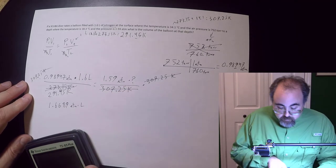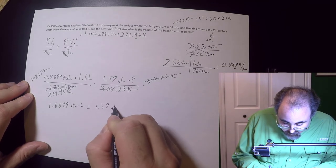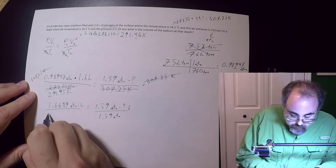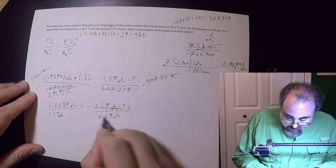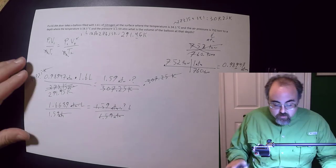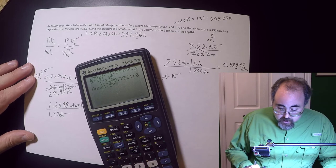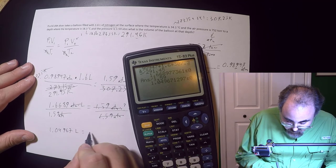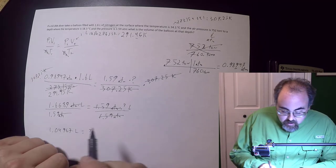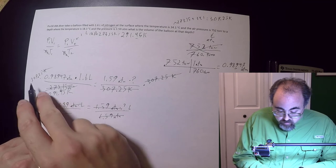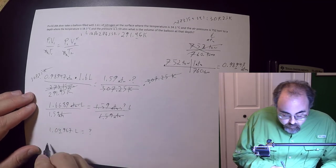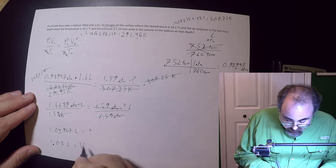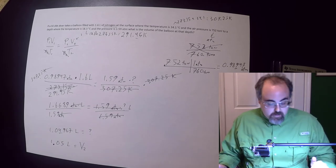And that's going to equal 1.59 ATM times I don't know what liters. So I will divide both sides by 1.59 ATM. That all goes away there. The ATMs go away, but not the numbers. And so now I take that number, divide it by 1.59, and boom, I get 1.04967 liters equals question mark. That looks good. Let's talk sig figs. I have three sig figs there, three there, more than three there, so it's three. So this now is going to give me 1.05 liters equals V2. So the final volume is a smidgen over a liter.